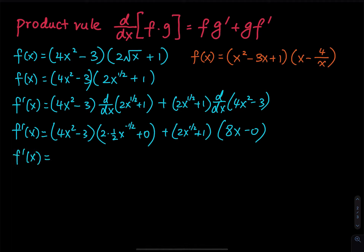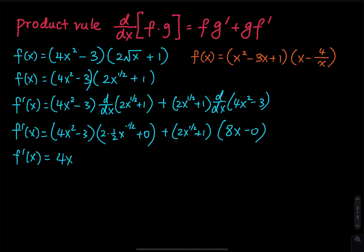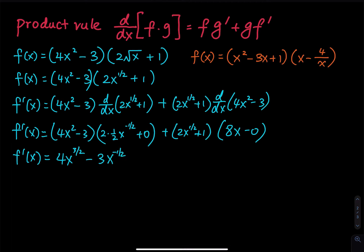So f prime of x equals: we have 4x squared times x to the negative one-half, which is 4x to the 2 minus one-half, so that is 4x to the 3 over 2. And then minus 3 times x to the negative one-half. Then 2 times 8 is 16, and x to the 1 plus one-half is x to the 3 over 2, plus 1 times 8x which is just 8x.